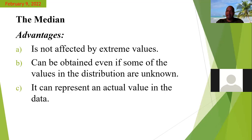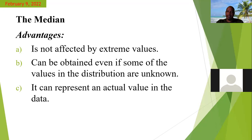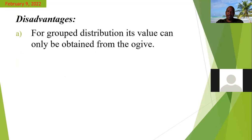The median can represent an actual value in the data. With the mean, you add up all the values and divide, giving you a different value from what's in the data. But for the median, you're actually using one of the values from the data. For a grouped distribution, its value can only be obtained from the ogive — you have to plot that graph in order to find the median.